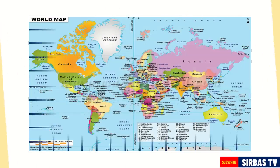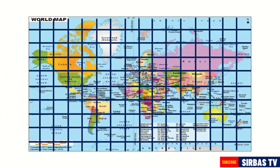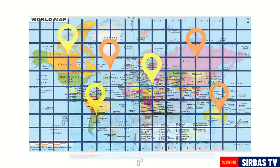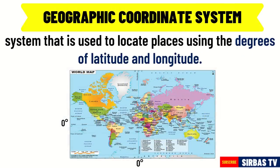The longitude and latitude on a map or a globe are very useful in locating places. The system that is used to locate places using the degrees of latitude and longitude is called the geographic coordinate system.